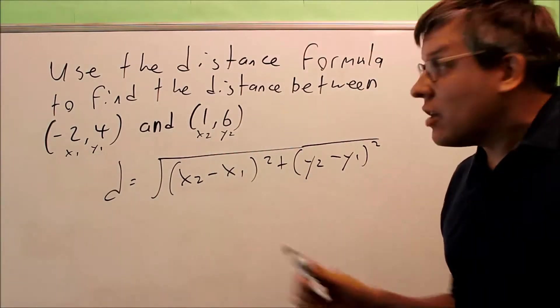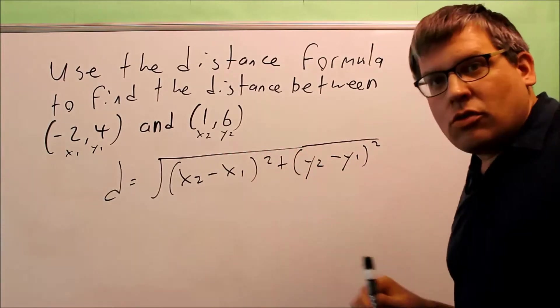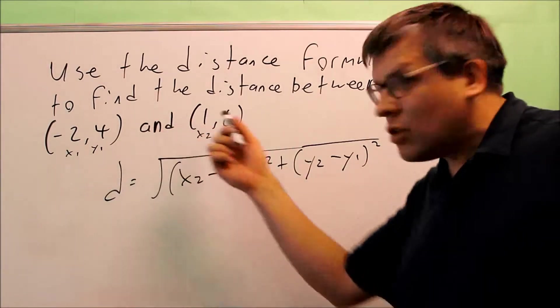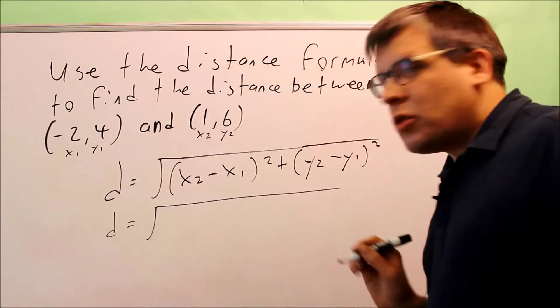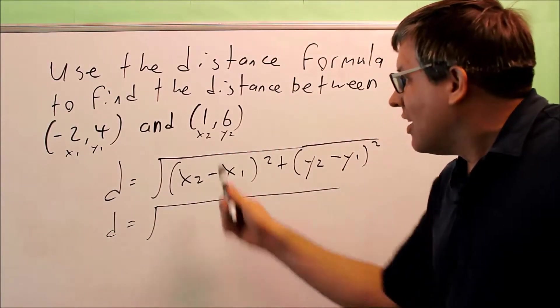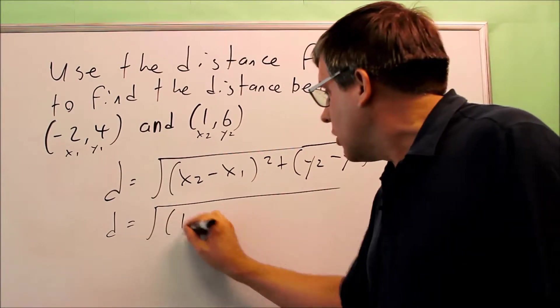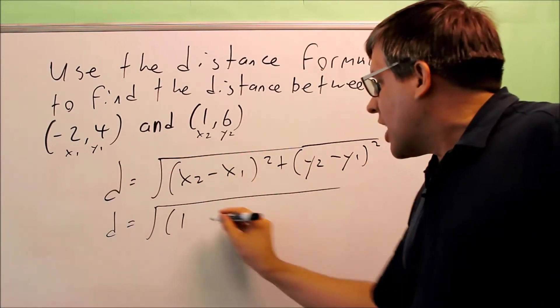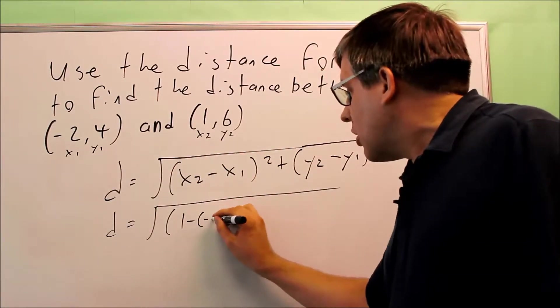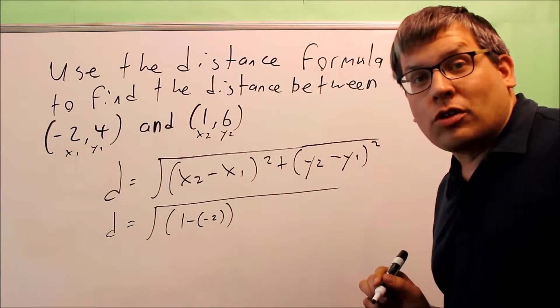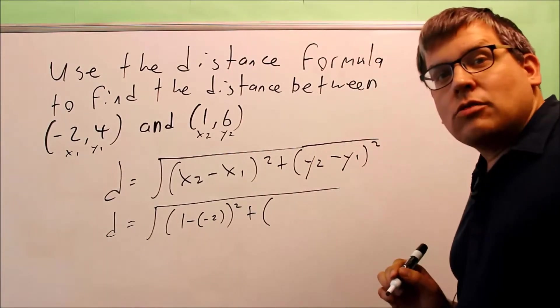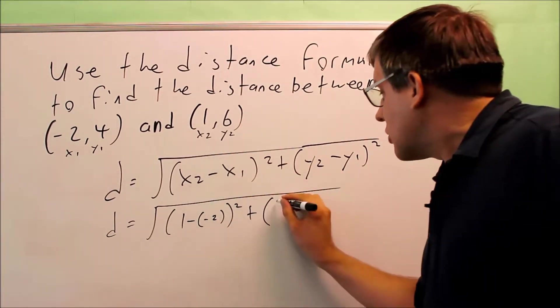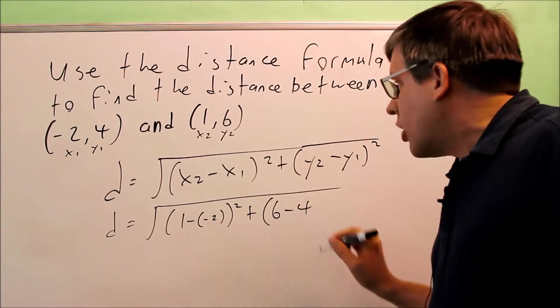Now we're going to take these numbers and put them into the distance formula to find the distance between these two points. First, we want to be careful when we substitute the numbers in. x₂ is 1, x₁ is negative 2. Notice that there is a double negative here. We have to be careful with the minus minus. Then I have y₂ minus y₁. y₂ is 6, minus y₁ is 4.